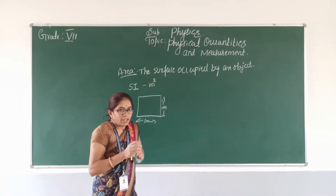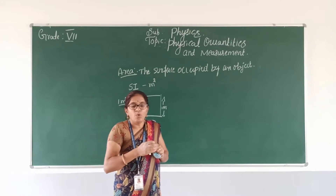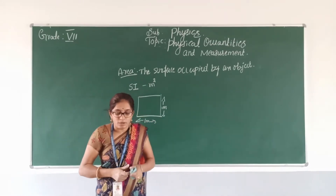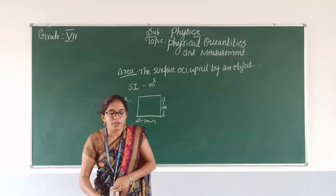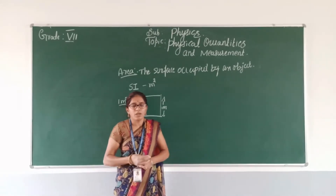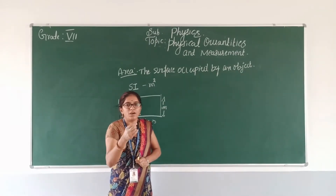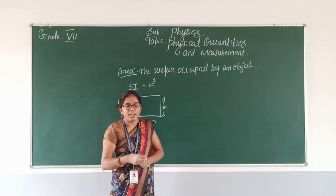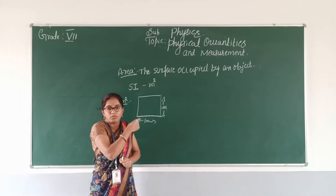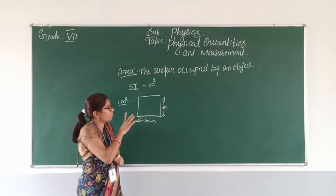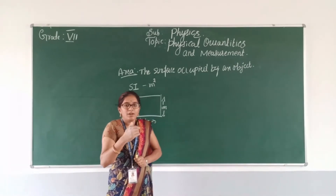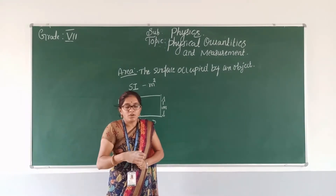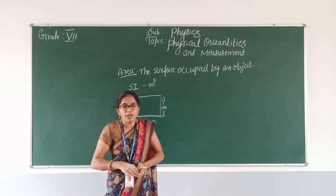So if the area of an object is more than a meter square, we can move to a bigger unit. If I want to find the area of a city or area of a village, I cannot use meter square. So at that time we have to move to another unit in order to measure the area of such an object.